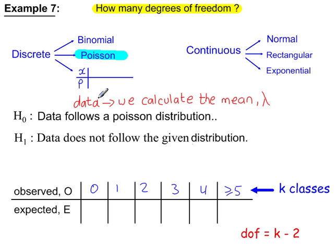Example 7: from the given data, we've calculated the mean lambda. So in H0, the data follows a Poisson distribution — there is no mention of the mean lambda, because we're not testing it. We're only testing whether the data follows the Poisson distribution. So k minus 2 degrees of freedom, giving 4 degrees of freedom.